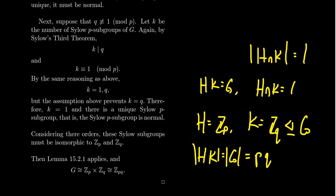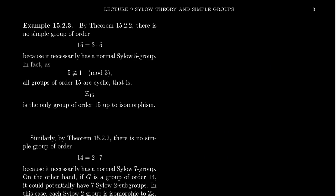Consider a group of order 15. Notice 15 factors as 3 times 5 — it's a product of two primes, so it can't be a simple group. And 5 is not congruent to 1 mod 3; 5 is actually congruent to 2. So by the theorem we just proved, any group of order 15 has to be cyclic. Therefore there is only one group of order 15 up to isomorphism, and it is the cyclic group. This is a classification theorem.